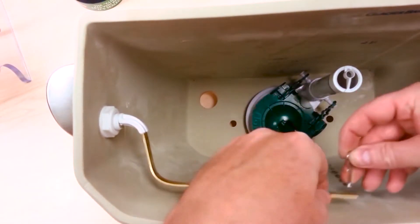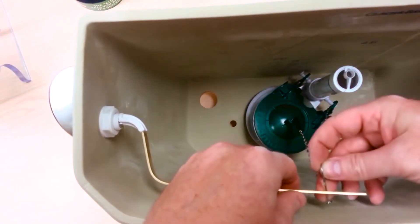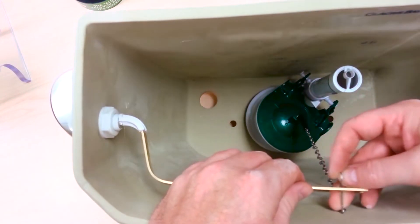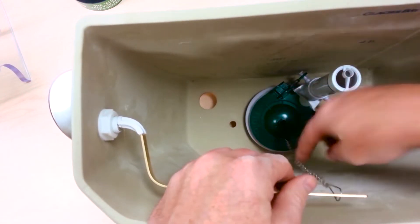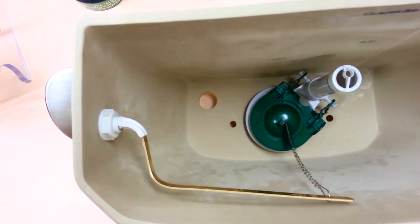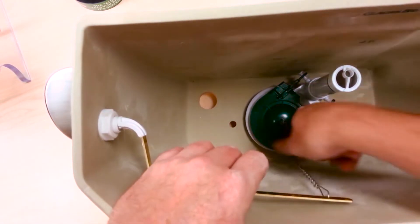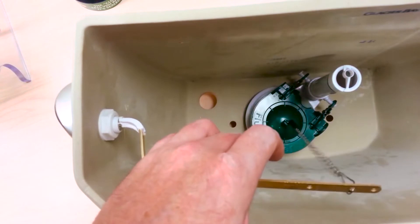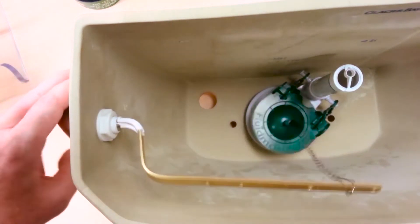Okay, and then take your flapper chain here and reconnect it to one of the holes in your tank lever, making the chain as vertical as possible. You probably want to take some of the slack out of the chain.